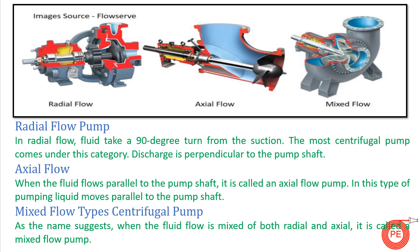For radial flow type pumps, the fluid enters at a 90-degree turn from suction — most centrifugal pumps fall under this category. The discharge is perpendicular to the pump shaft. The fluid enters from the suction passage, takes a 90-degree turn, and moves out through the discharge. This type accounts for around 70 to 80 percent of pumps used in industry and is used for high head generation.